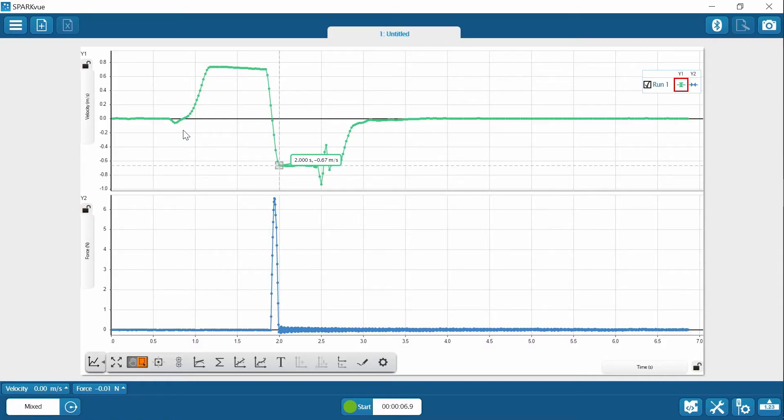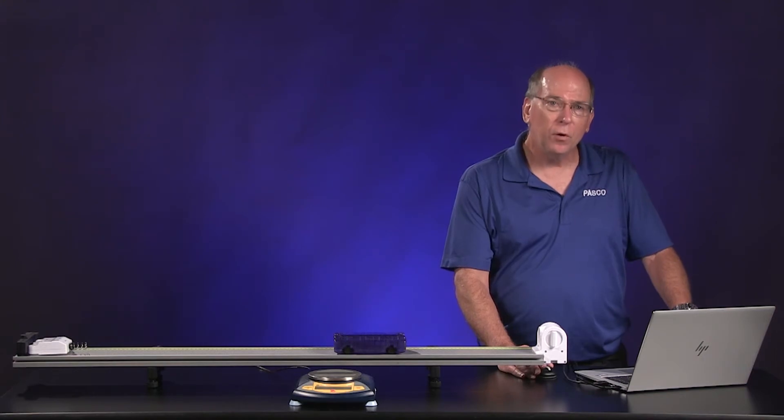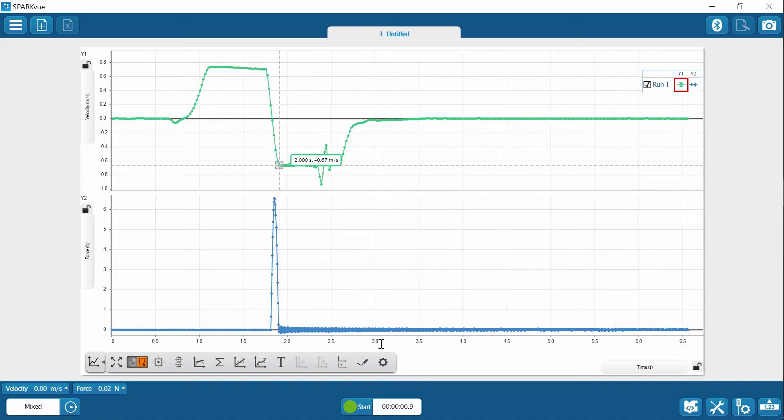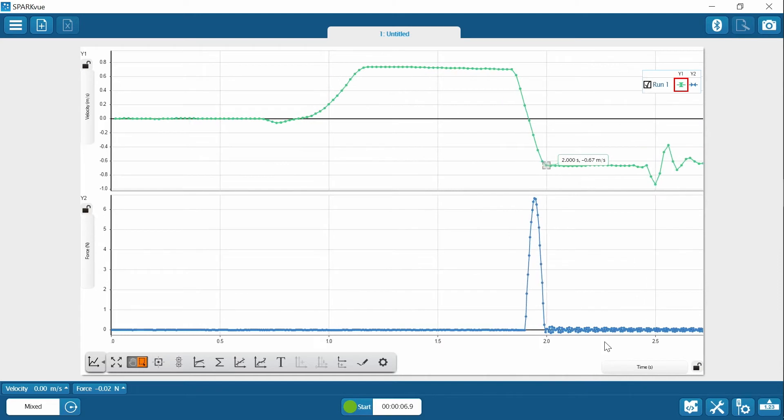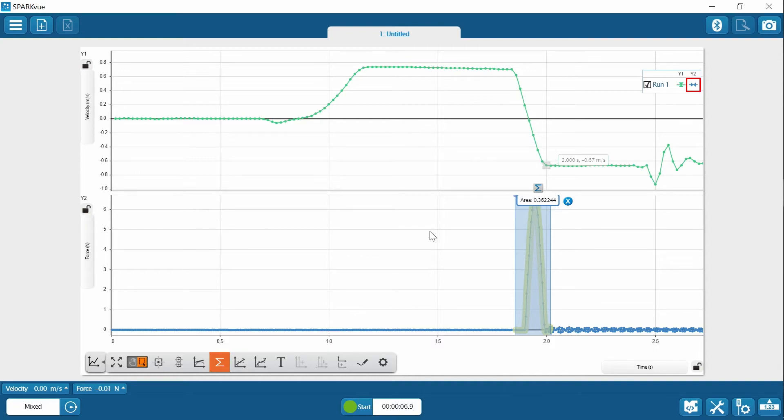On the force graph, the area under the curve is known as the impulse. To find the impulse, we need to measure the area under only the part of the graph where the collision occurred. So it might help to expand that out. And then we can use the selection tool to just select the part of the graph where the collision occurs. You can see it matches where the velocity changes too. And then we select statistics and now area. And so that comes out to 0.36.